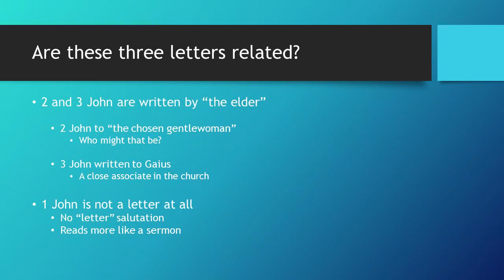I think the answer is going to be their relationship to First John. I'm going to try to wrap these two issues together — the contents of these three letters and their relationship to one another. Second and Third John are clearly letters, written by somebody called 'the elder.' Each one has a clear letter structure with a salutation at the beginning and a farewell at the end. Second John is written by the elder to somebody called the 'chosen gentlewoman and her children.'